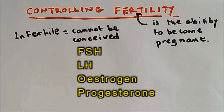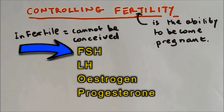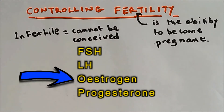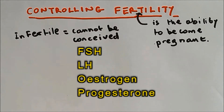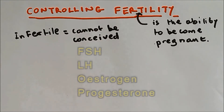Fertility of a woman can be controlled using four hormones, and these are FSH, LH, estrogen, and progesterone. These hormones can be used to either increase fertility or decrease fertility.